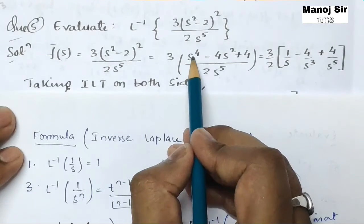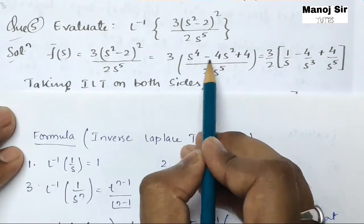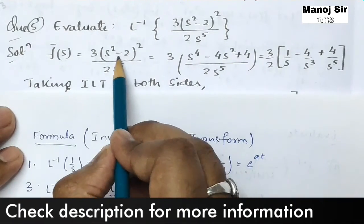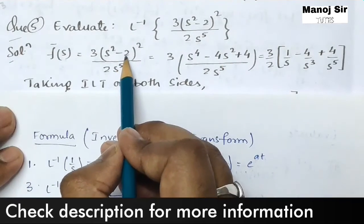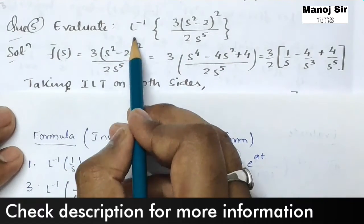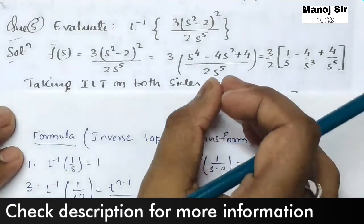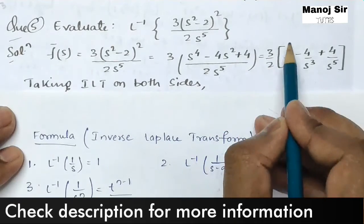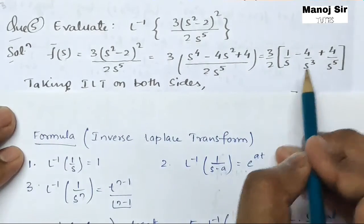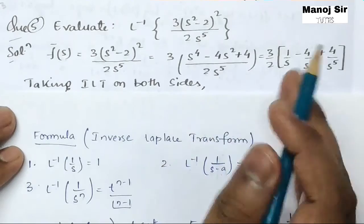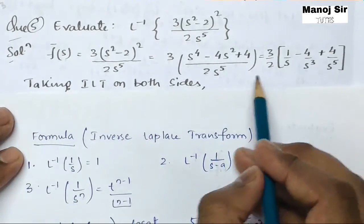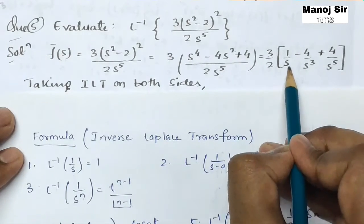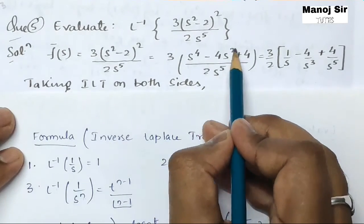The square of s² is s⁴. Applying (a − b)² = a² − 2ab + b², we get s⁴ − 2(2)(s²) + 2² = s⁴ − 4s² + 4. Now separating each term: we have 3/2 as a constant outside the bracket, leaving s⁴/s⁵ = 1/s, then minus 4s²/s⁵.